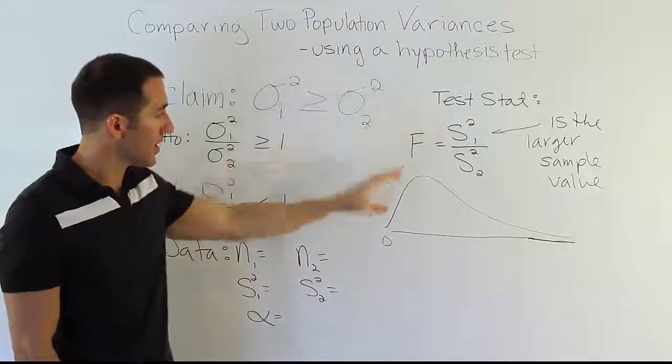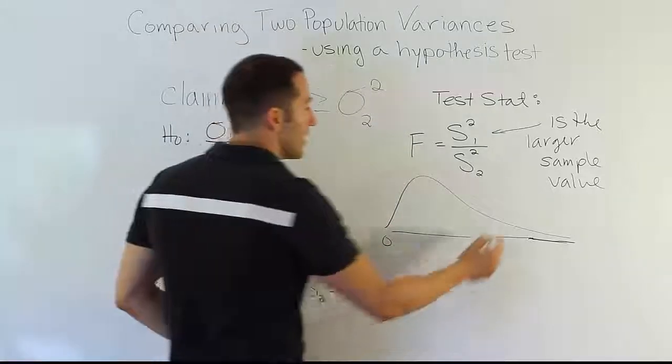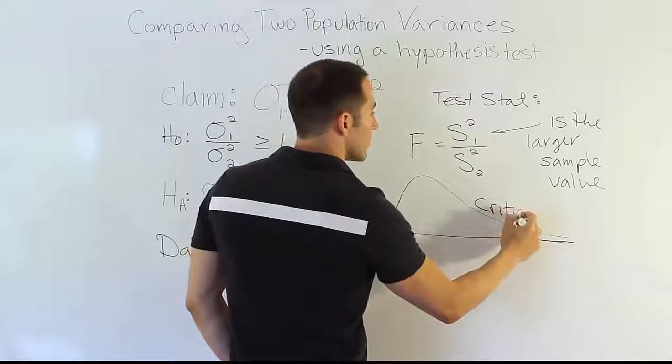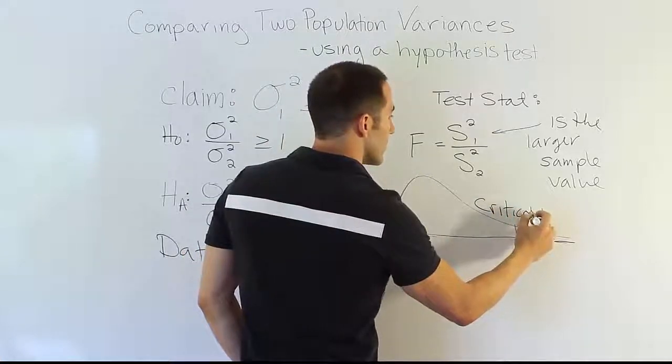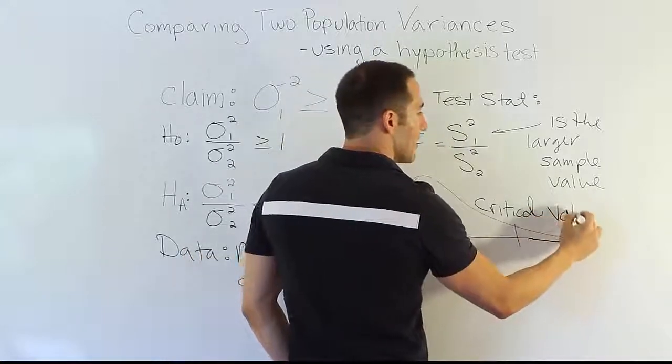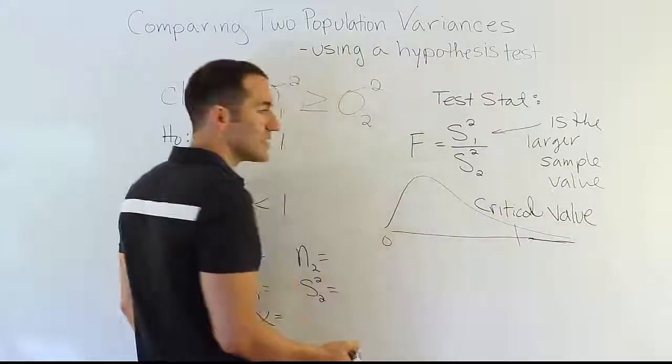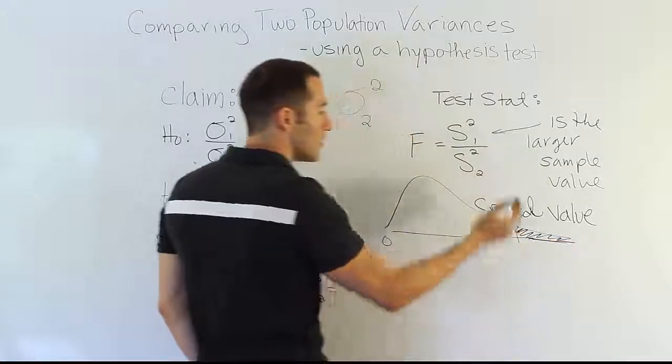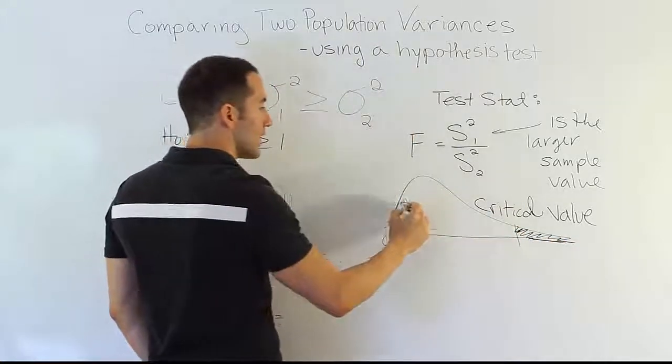So after the test stat, of course, we have to do the critical value step. The critical value—that says critical, by the way, sorry for my sloppy handwriting—but the critical value here is essentially the cut-off score, where we separate the rejection region from the do not reject region.